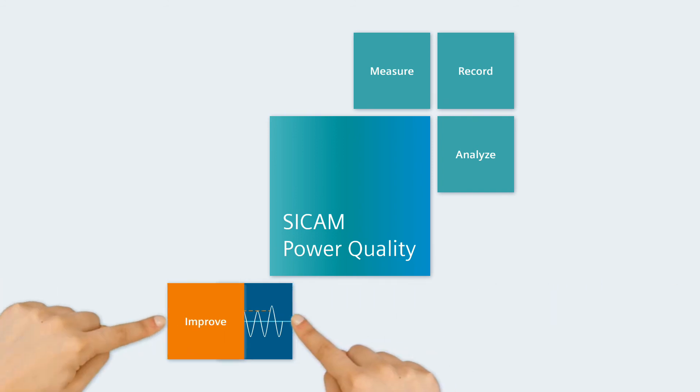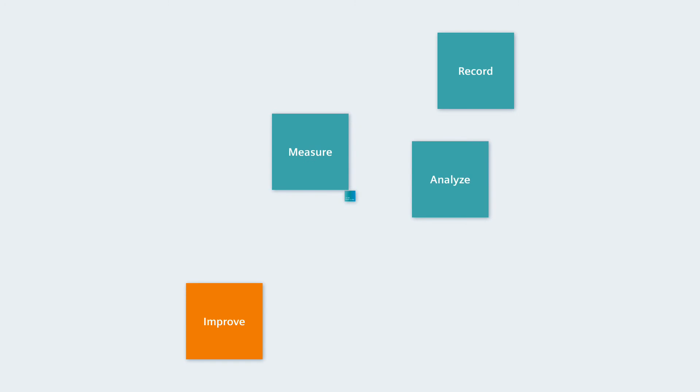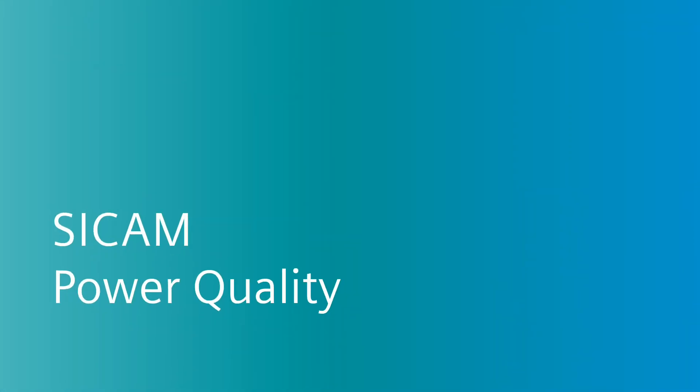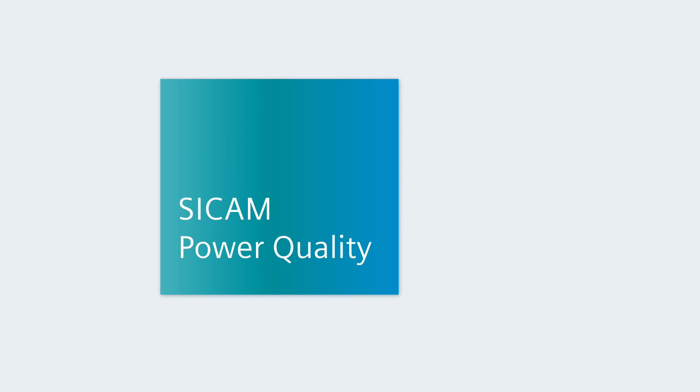Now you can reduce interferences with targeted countermeasures and improve your processes. Measure, record, analyze, and improve. With this continuous action loop, you increase the voltage quality and avoid unnecessary costs. For this, rely on SICAM Power Quality. SICAM Power Quality: measurably better.